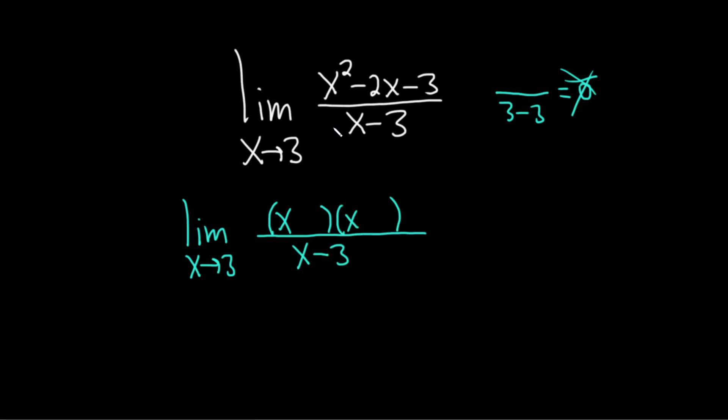So because this problem should work out, and we need two numbers that multiply to negative 3, I'm going to guess that one of them is negative 3. So if one of them is negative 3, that means the other one is going to have to be 1.